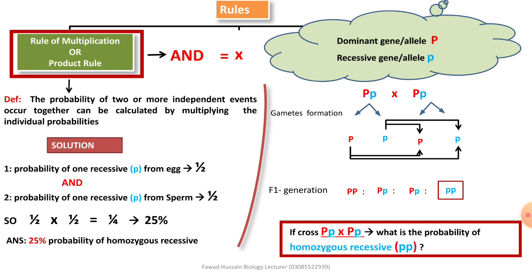In F1 generation, total हमारे पास four offspring हैं: one, two, three, four। इनमें से जो required है — homozygous recessive — वो एक है। मतलब four में से one homozygous recessive है = one over four = 25%। Mean that: statistical analysis side पर भी same result आया और Mendelian genetics apply करने पर भी same result — one over four = 25%। Large data के लिए statistical analysis, small data के लिए Mendelian genetics — result is same।